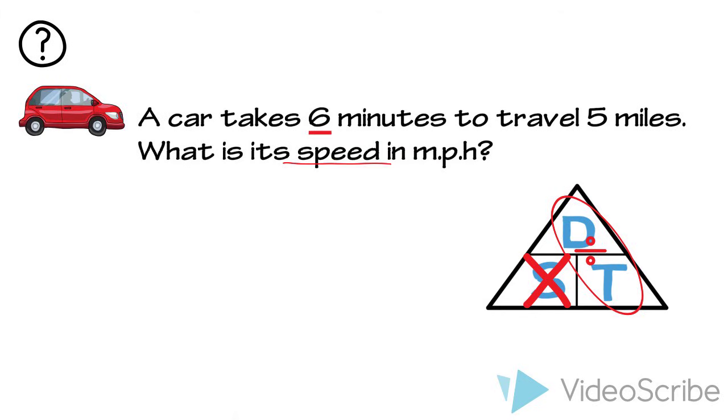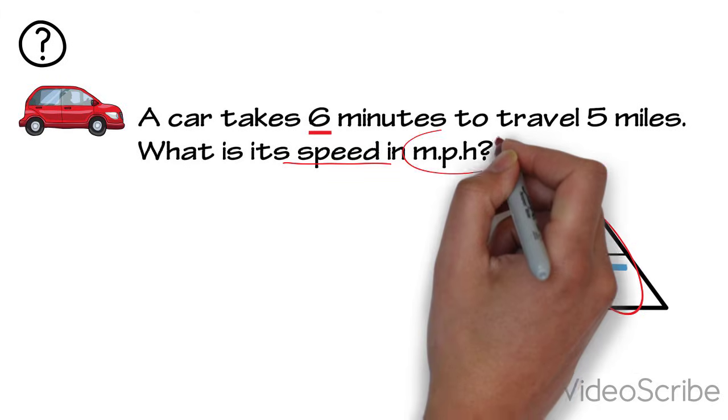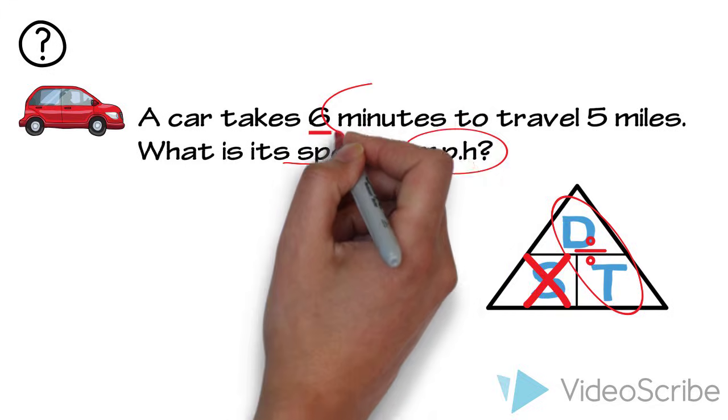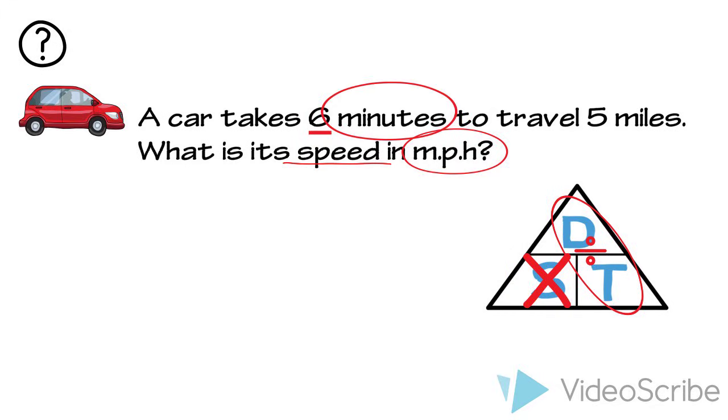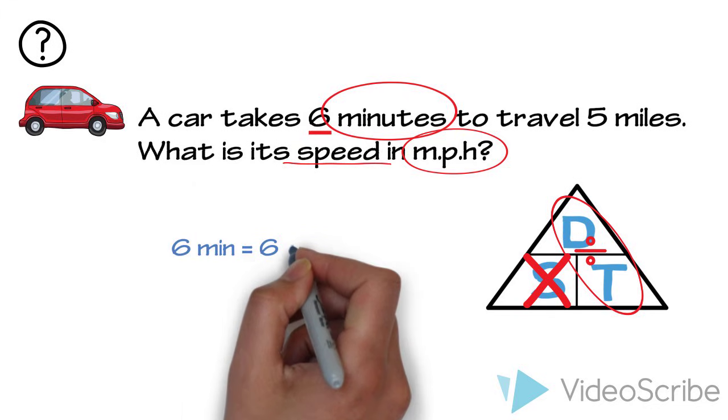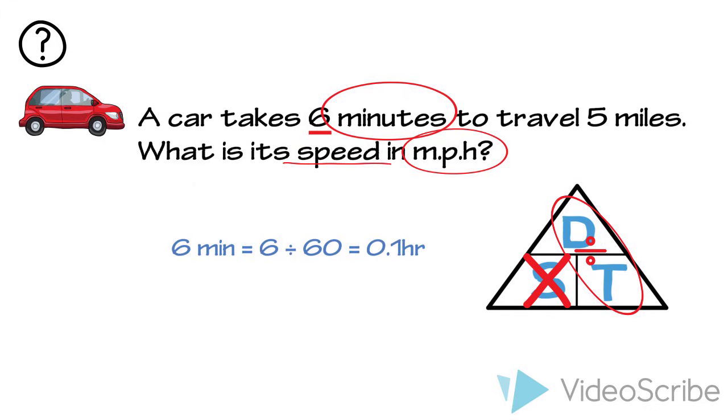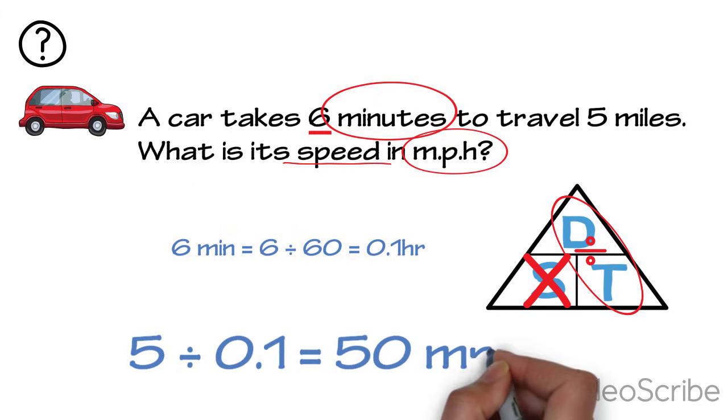The car has travelled six miles, and our answer will be in miles per hour, so we do need to convert our minutes into hours first. Convert the six minutes by dividing by 60 like this. Now we can work out our answer from five divided by point one, which equals 50 miles an hour.